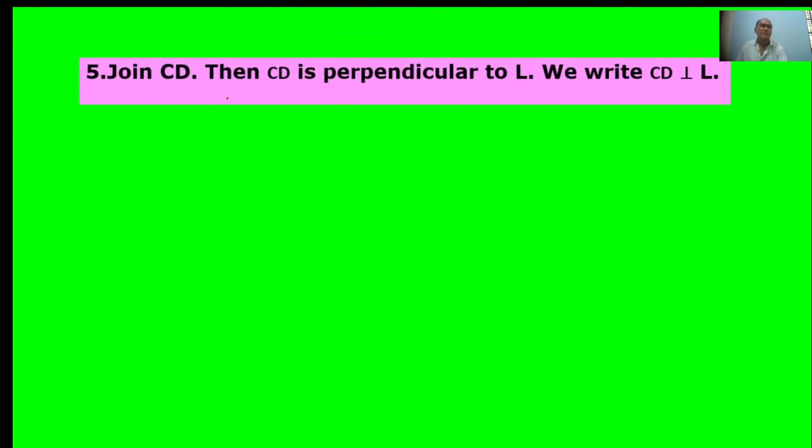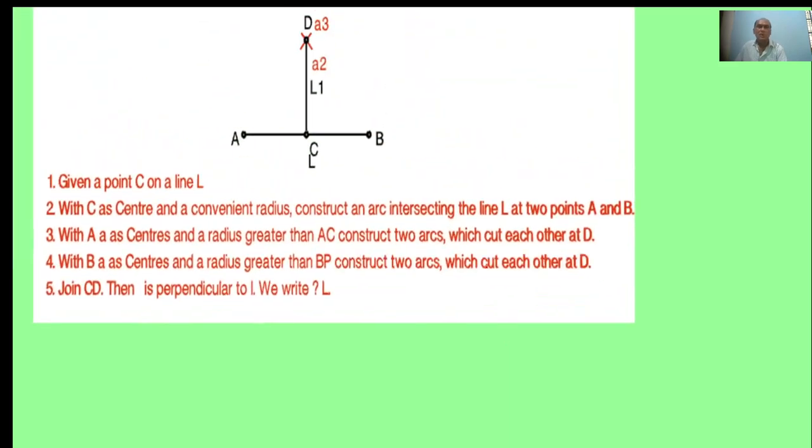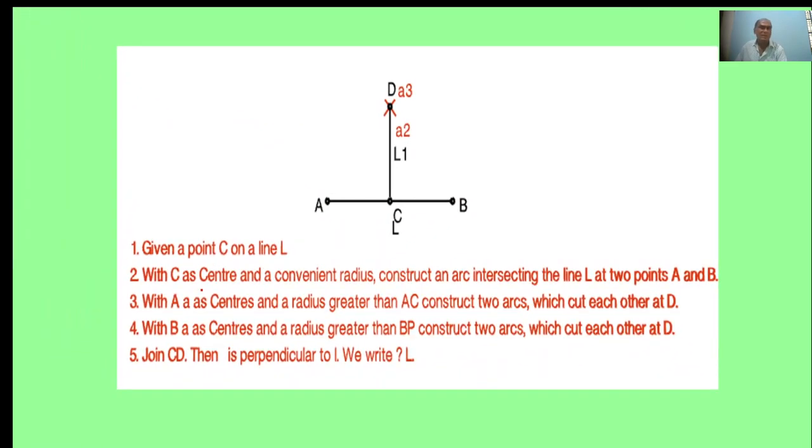Join CD. Then CD is perpendicular to L. The intersect point is D. Join CD. CD is perpendicular to L. The perpendicular line construction steps are given in five steps.